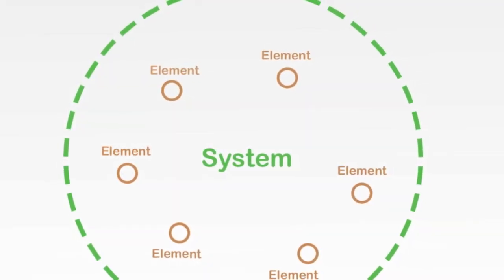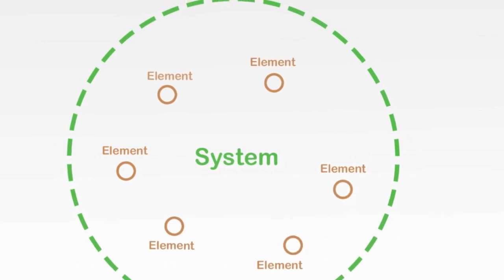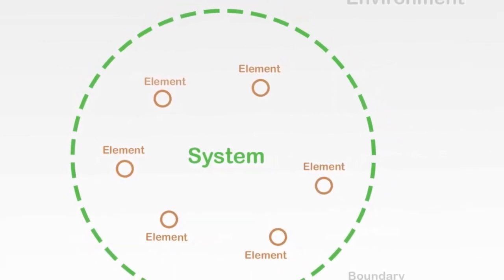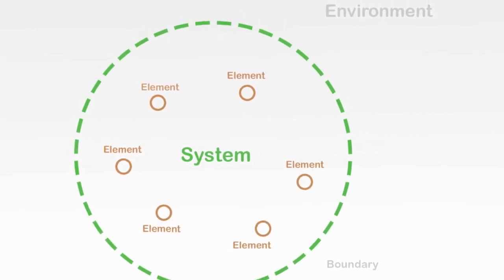The model of a system can be loosely defined as a set of parts, often called elements, that form a whole which is referred to as a system. A system exists within an environment and has a boundary that differentiates the system's exterior from its interior.